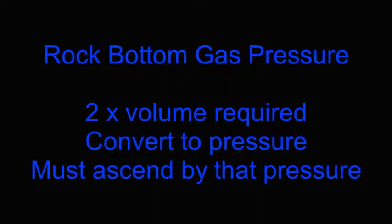To calculate the rock bottom gas pressure, you must multiply two times the volume required for a single diver to go from the bottom to the first decompression stop. That volume must then be converted to pressure based upon the total tank volume.